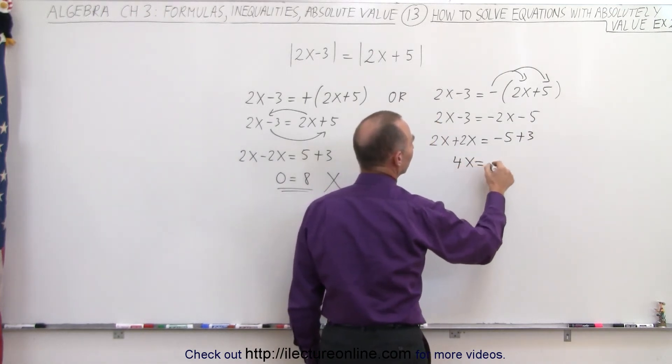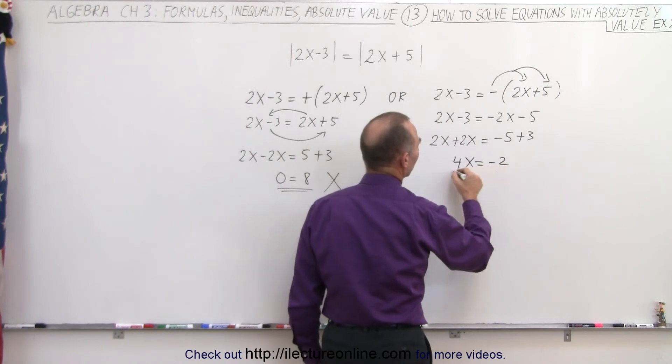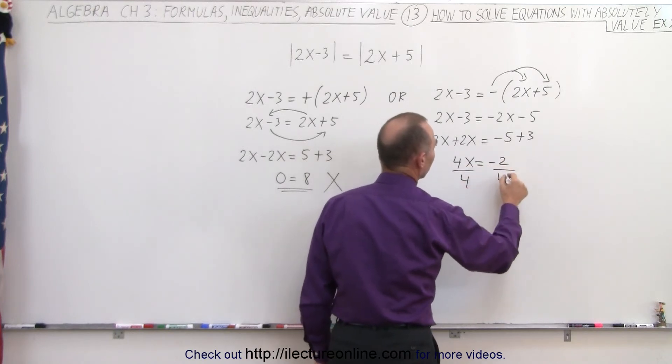So here we end up with 4x equals negative 2, divide both sides by 4, and we get x equals negative one-half.